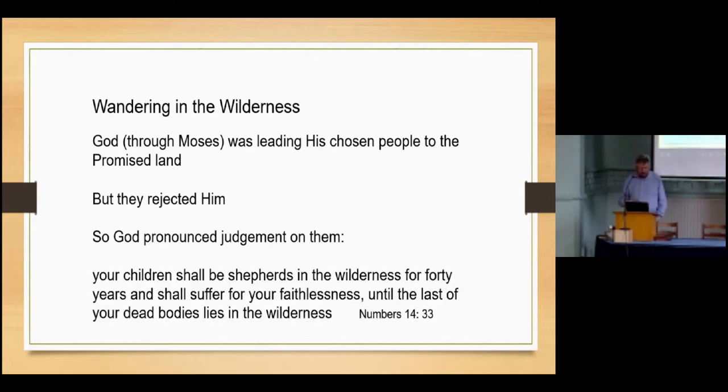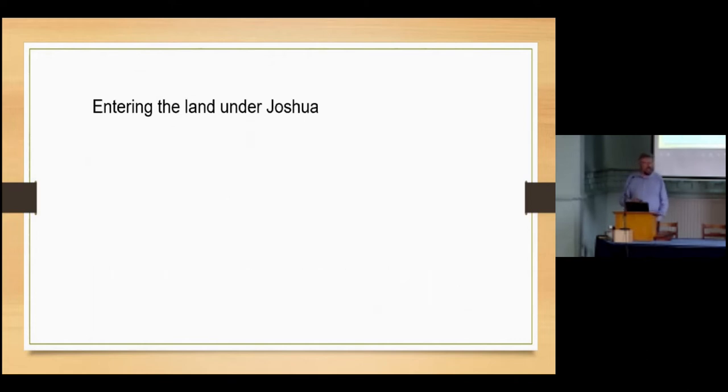And God had said, if you reject me, if you rebel, there will be punishment, there will be consequences. So God pronounced the judgment on them. In Numbers 14 we can read: Your children shall be shepherds in the wilderness for 40 years and shall suffer for your faithlessness until the last of your dead bodies lies in the wilderness. And that's what happened. When eventually they did, at the end of 40 years, go into the promised land, there were only two that were adults when they came out of Egypt who actually went in: Joshua and Caleb. So we come to them entering the land under the leadership of Joshua, Moses having died just before they entered, and the new generation were finally allowed in.